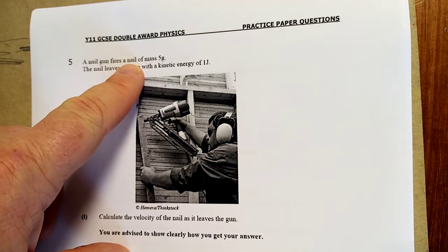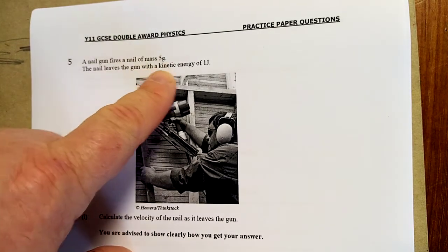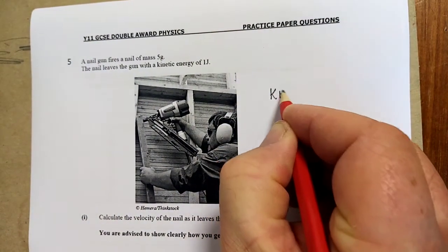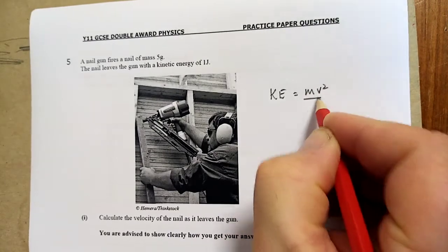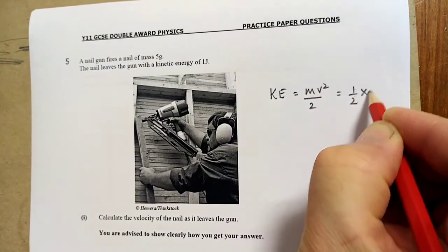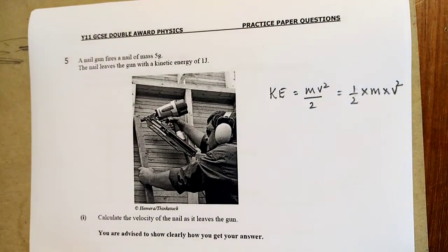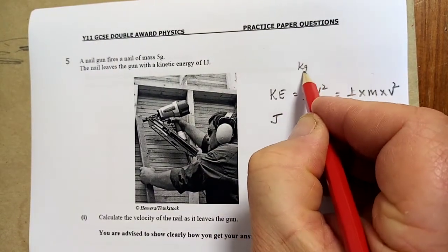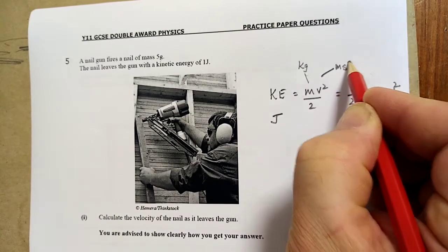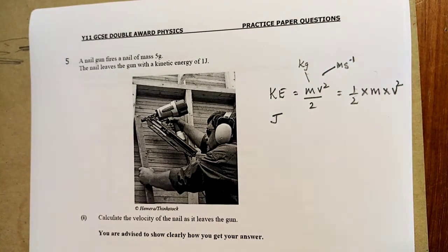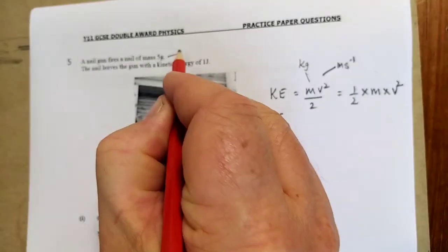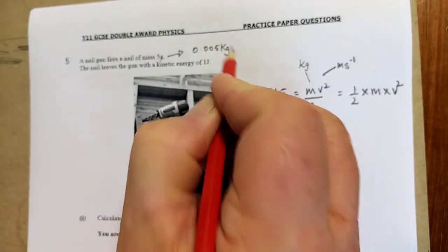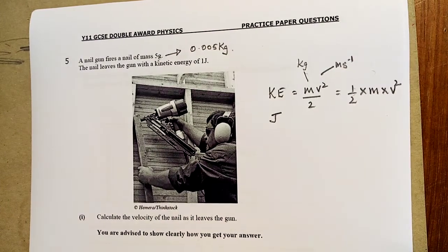A nail gun fires a nail of mass 5 grams. The nail gun leaves it with a kinetic energy of 1 joule. Calculate the velocity. Now, KE equals mv squared over 2. You can also read it as a half by m by v squared. They're both the same thing. Joules, kilos, meters per second. So the trick here is that's 5 grams, and 5 grams is 0.005 kilos. Divide by a thousand.